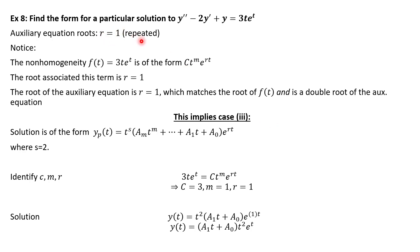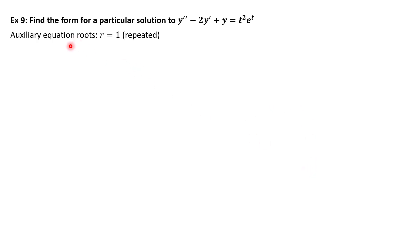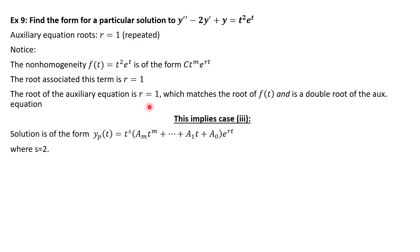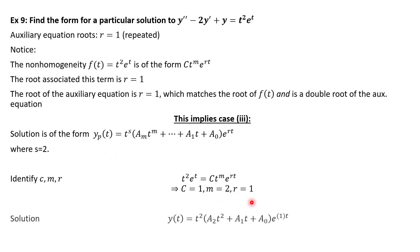Example 9: the non-homogeneity is t²·e^t, so r = 1 again, which matches the repeated auxiliary root — case 3 again, s = 2. With m = 2 and r = 1, plugging into the format gives a solution very similar to the last one, just with m = 2 instead of 1.